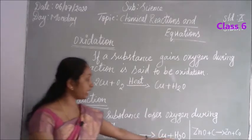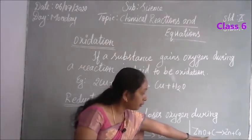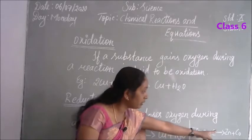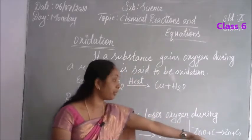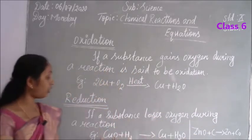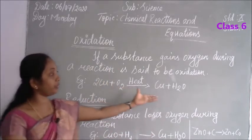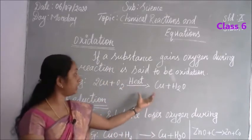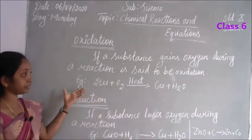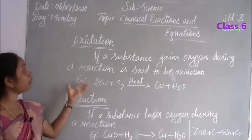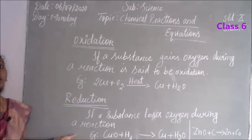One more example: zinc oxide combined with carbon will produce zinc, and carbon monoxide will be separated — the oxygen will be lost. So these are the examples for oxidation and reduction reactions. Very important.